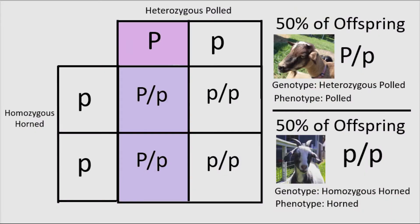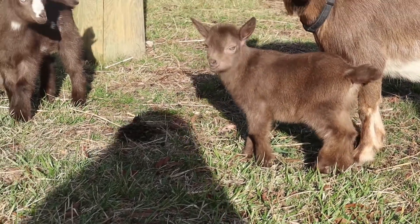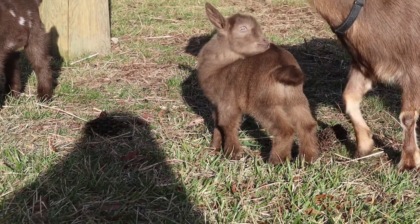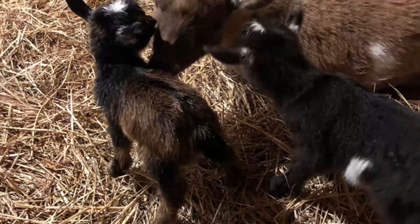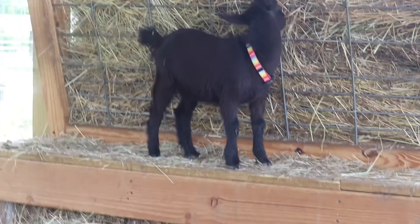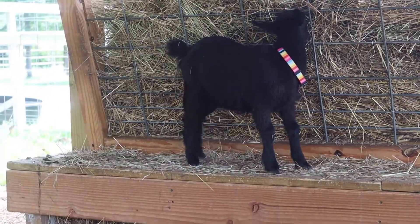The second pairing is a heterozygous polled goat crossed with a horned one. This pairing should result in 50% of the offspring having a genotype of capital P slash lowercase p, meaning they are polled, and 50% being horned. Keep in mind that this 50% does not always split evenly within a litter. For example, one of our polled does bred to a disbudded buck in 2022 had triplets — all three were polled. Another polled doe bred to a disbudded buck had two kids, both of which were horned and had to be disbudded. This 50-50 ratio is based off of having a large sample size.